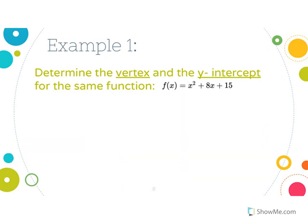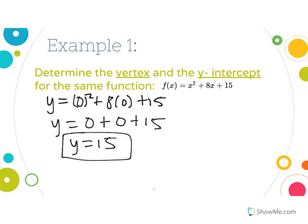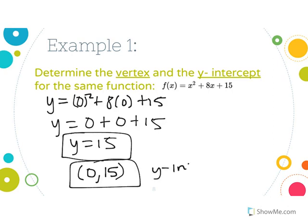Now find the y-intercept for that same equation. Plug in 0 for x: 0 squared is 0, plus 8 times 0 is 0, plus 15. So y equals 15, and our y-intercept is the point (0, 15). A helpful shortcut: the y-intercept is always the c term — the number by itself — when you're in standard form.